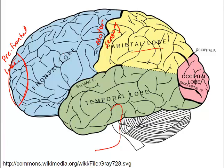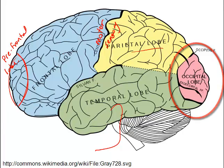The temporal lobe is also responsible for long-term memory. At the very back is the occipital lobe, which is where our primary visual receptive and processing areas are. It controls voluntary movements, and degeneration of this area results in Parkinson's disease, which includes rigidity, tremors, and difficulty initiating voluntary motions.